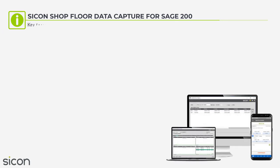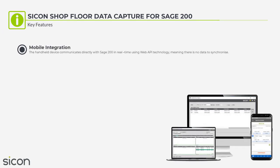Key Features — Mobile Integration: The handheld device communicates directly with Sage 200 in real-time using Web API technology, meaning there is no data to synchronize.